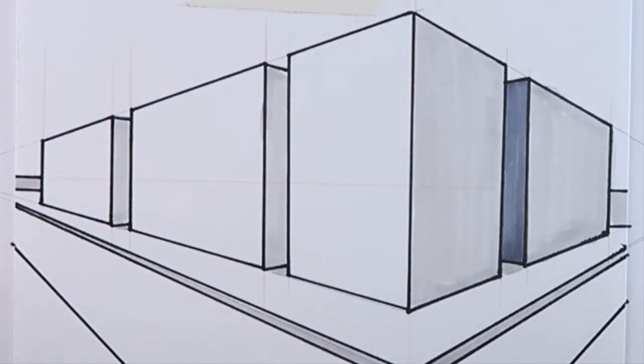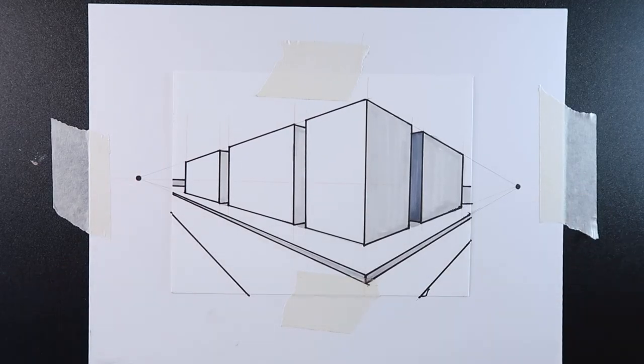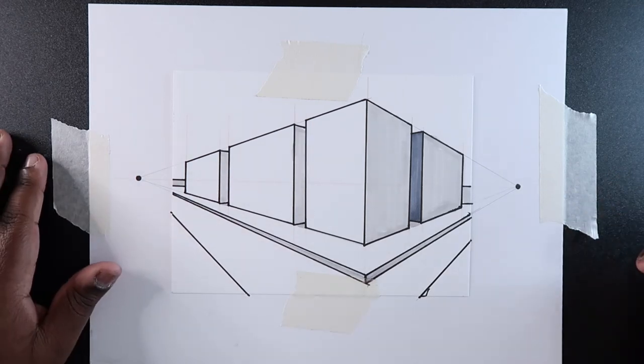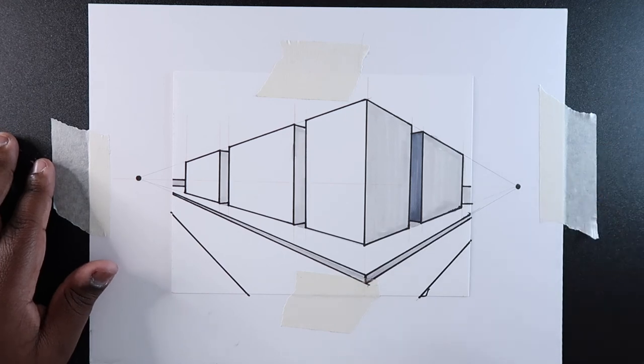So we're pretty much done here. This is what the drawing looks like without the vanishing points. That's how you draw in two-point perspective. If you like the video and find it useful give it a like and a comment, subscribe if you haven't, and tap the notification bell so you never miss an upload. I'll see you in the next video.